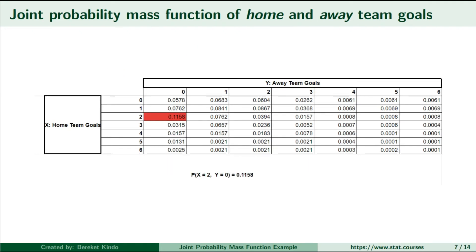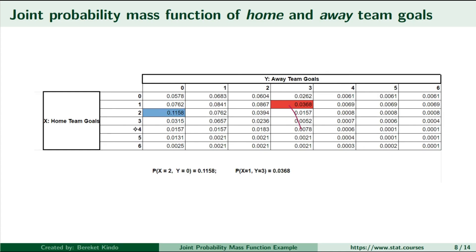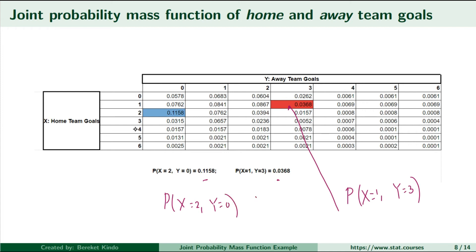For example, the highlighted cell is the joint probability that X takes the value of 2 and the random variable Y takes the value of 0 — that is the probability that the home team wins with a final score of 2 to 0. That joint probability is equal to 0.1158. Another joint probability example is P(X=1, Y=3), which equals 0.0368 — that is the joint probability of the home team scoring 1 goal and the away team scoring 3 goals. That probability is less than the joint probability at X=2, Y=0, meaning there is a larger probability mass at (2,0) compared to (1,3).